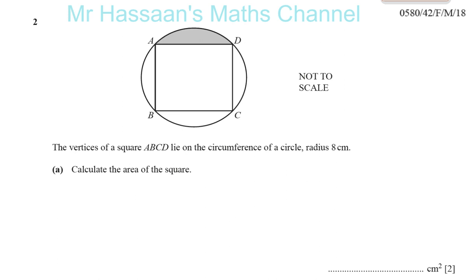Welcome back. Here I have question number two from February-March 2018, Paper 4, Variant 2. It tells us that the vertices of a square ABCD lie on the circumference of a circle with a radius of 8 cm — so it's a cyclic quadrilateral as well. Calculate the area of the square.